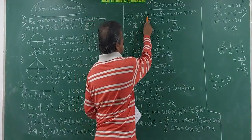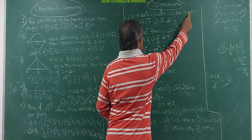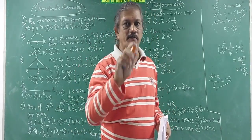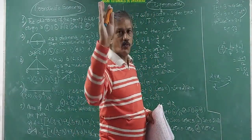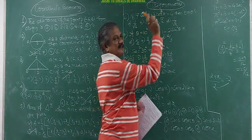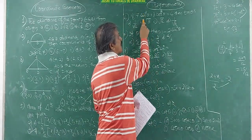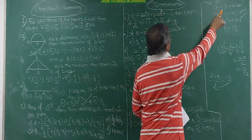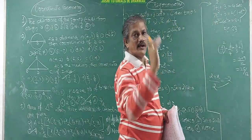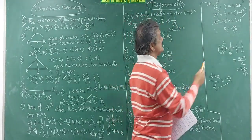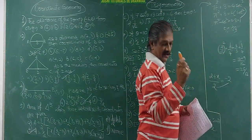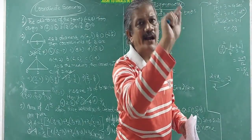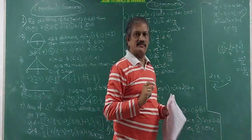Watch carefully: 7sin²θ + 3cos²θ = 4. Find the value of tan θ. This is a tricky question. Divide throughout by cos²θ: sin²θ/cos²θ is tan²θ; cos²θ/cos²θ cancels to give 3; and 4/cos²θ is 4sec²θ. Replace sec²θ with (1 + tan²θ): you get 7tan²θ + 3 = 4(1 + tan²θ).